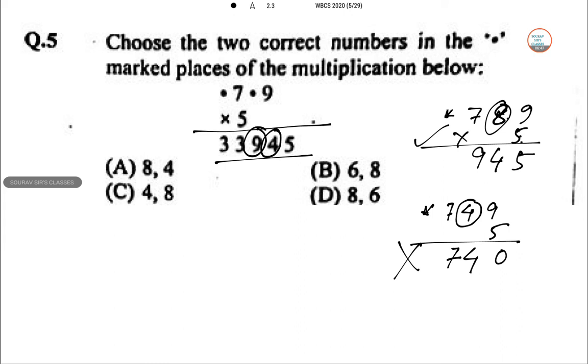So 8, 9. So 5, 7 is 35, 9, 3 in hand. 5 into something is. So here we can take 6. 5, 6 is 30 plus 3. So 6, 7, 8, 9. So the answer in the boxes will be 6 and 8. Option B is correct.